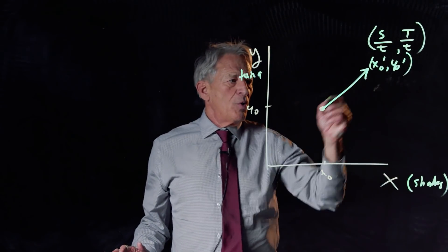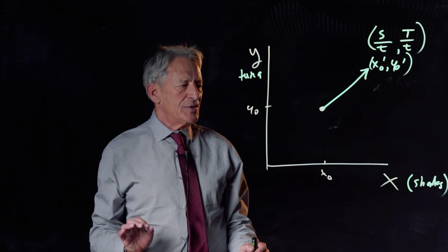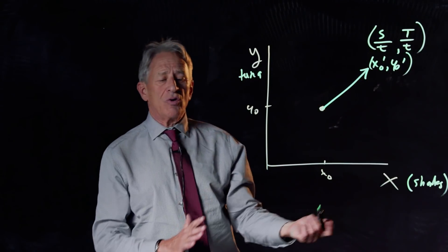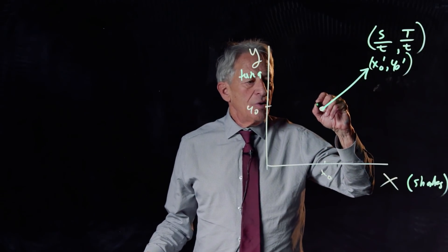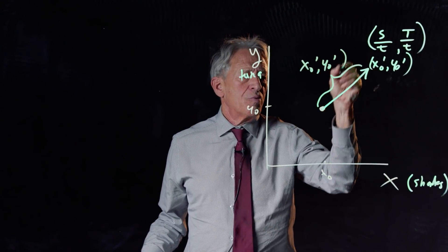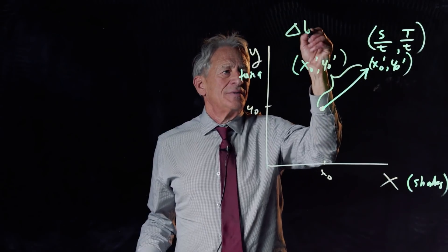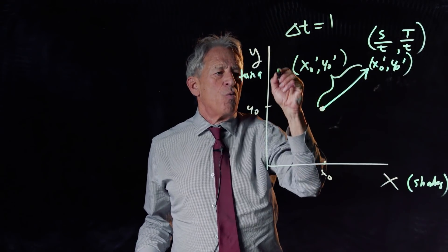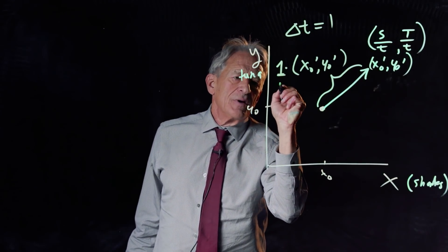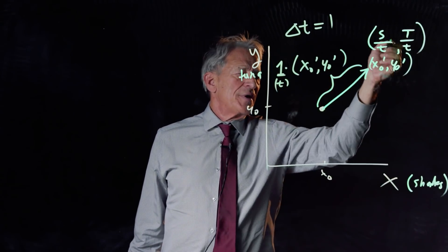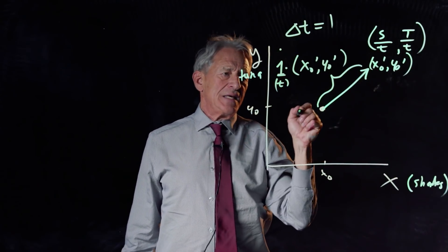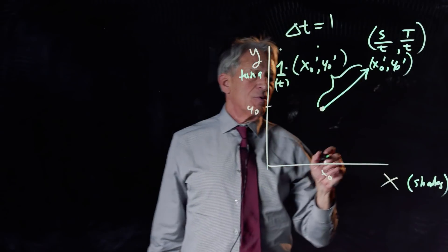So what I am drawing here is not literally x0 prime, y0 prime, because I couldn't draw it on that space. What I am drawing here is x0 prime, y0 prime, times delta t equals 1, and the delta t here has the units of time, and this has the units of animals per time, and so the product of delta t and x0 prime, y0 prime,